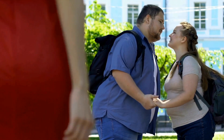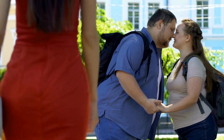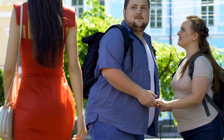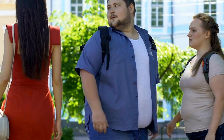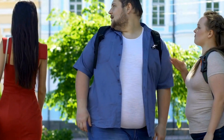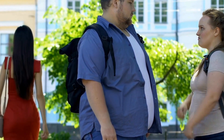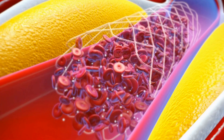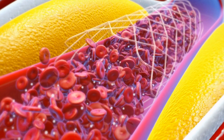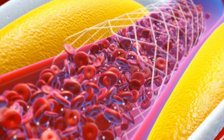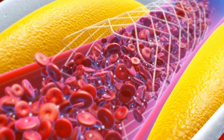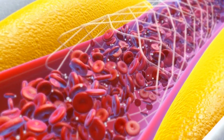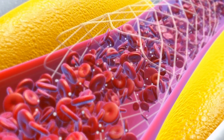The gut microbiota refers to the trillions of microorganisms that reside in our intestines and play a crucial role in regulating various bodily functions. The gut-brain axis is a bi-directional communication system between the gut and the brain, involving both neural and hormonal pathways.